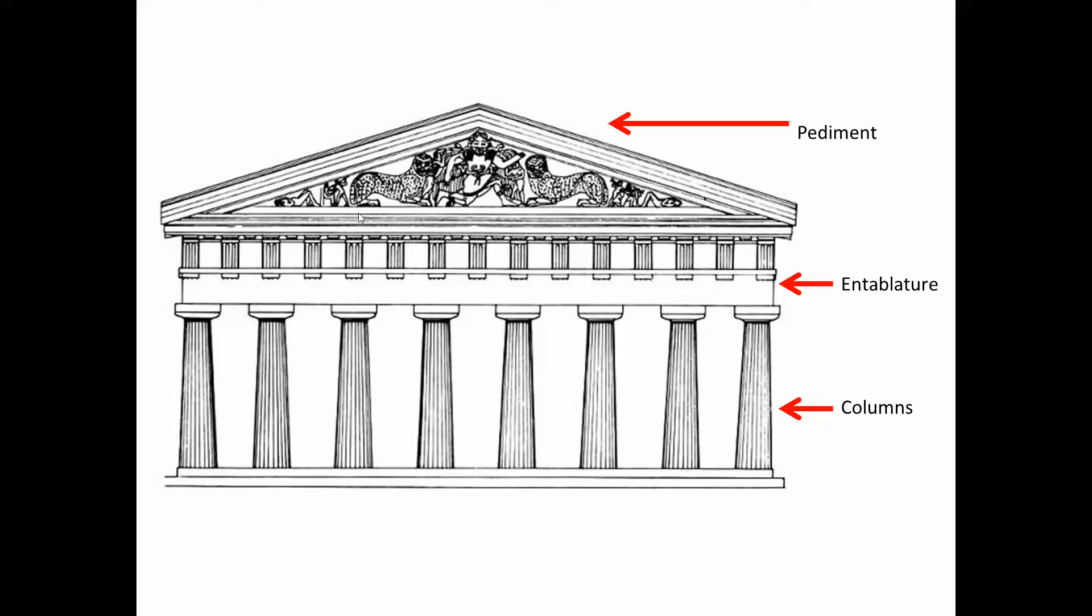So we have the top triangle area called the pediment. We have this long section here that's in between the pediment and the columns called the entablature, and then we have the columns on the bottom.